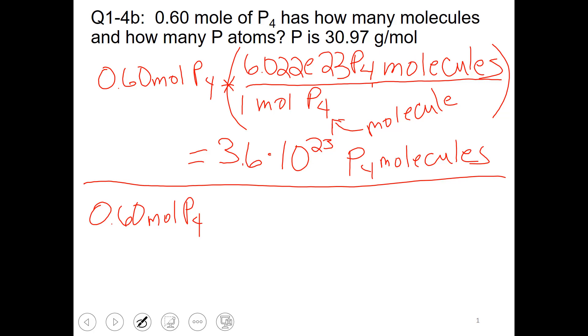For the second part of this question, I'm asked about phosphorus atoms. Once again, I'll start with what I'm given, 0.6 moles of P4. I believe it is a true statement to say that there are 4 moles of phosphorus atoms in 1 mole of P4. That is a true ratio of 1 divided by 1 and my first multiplier.